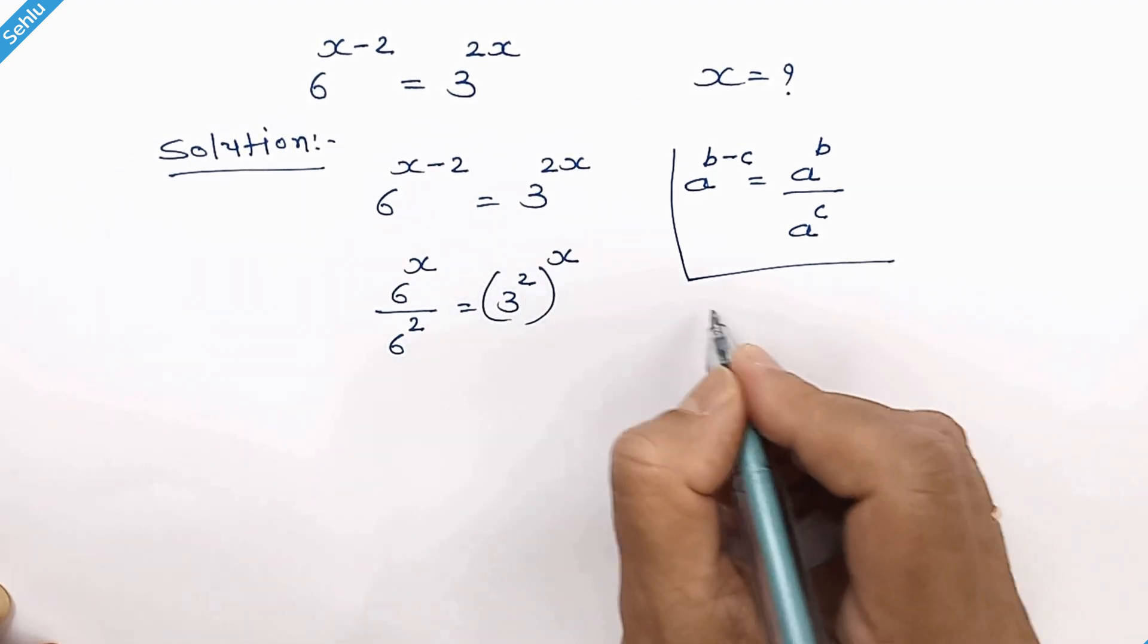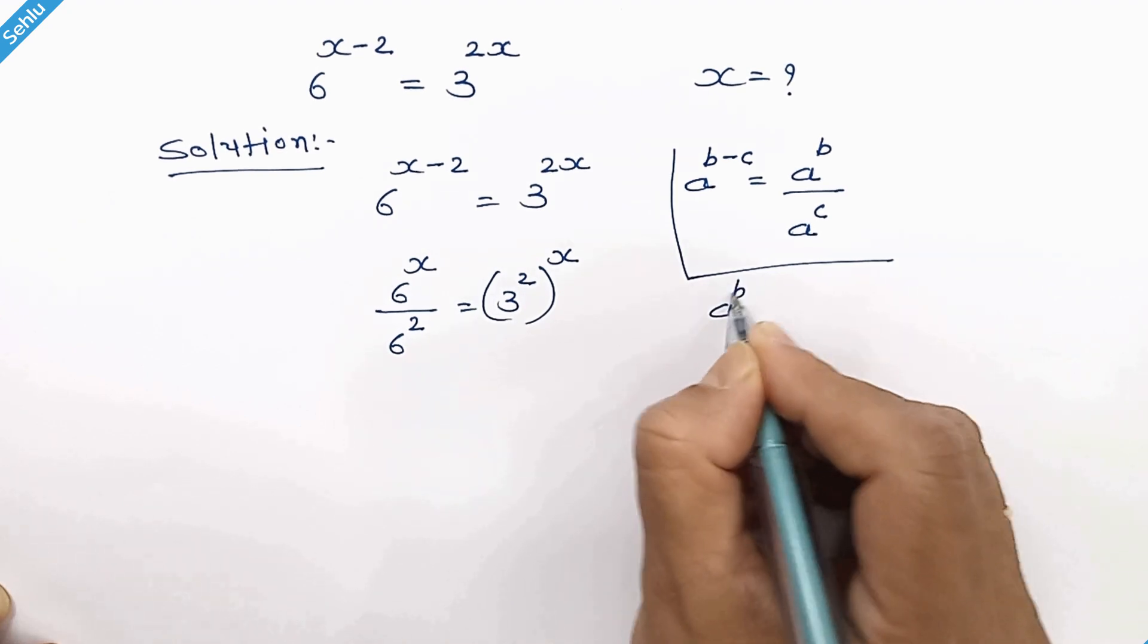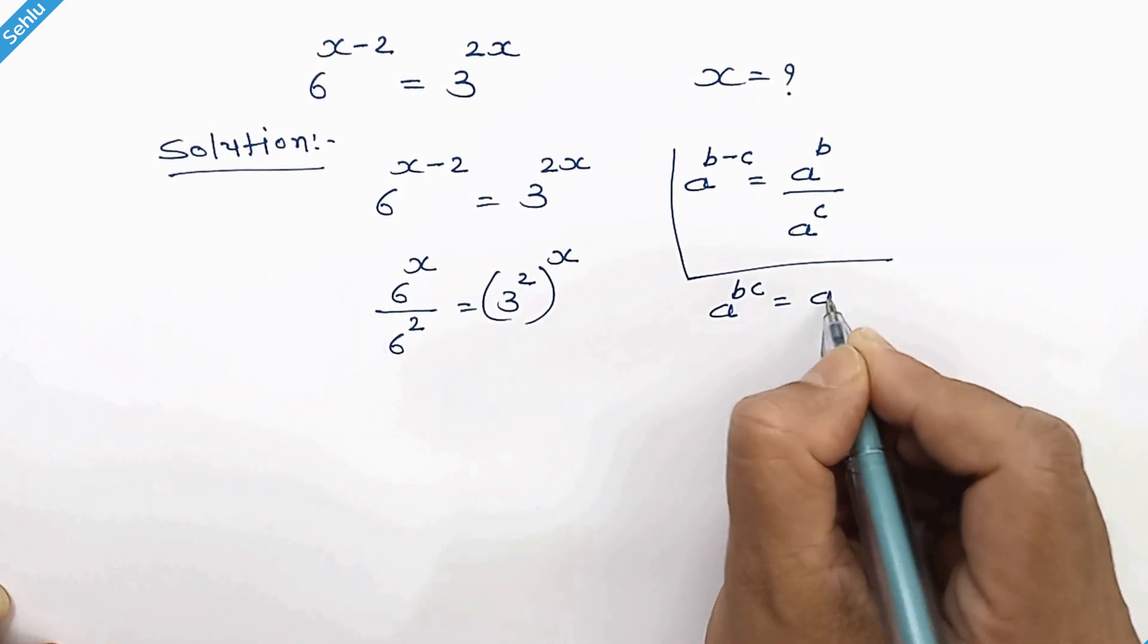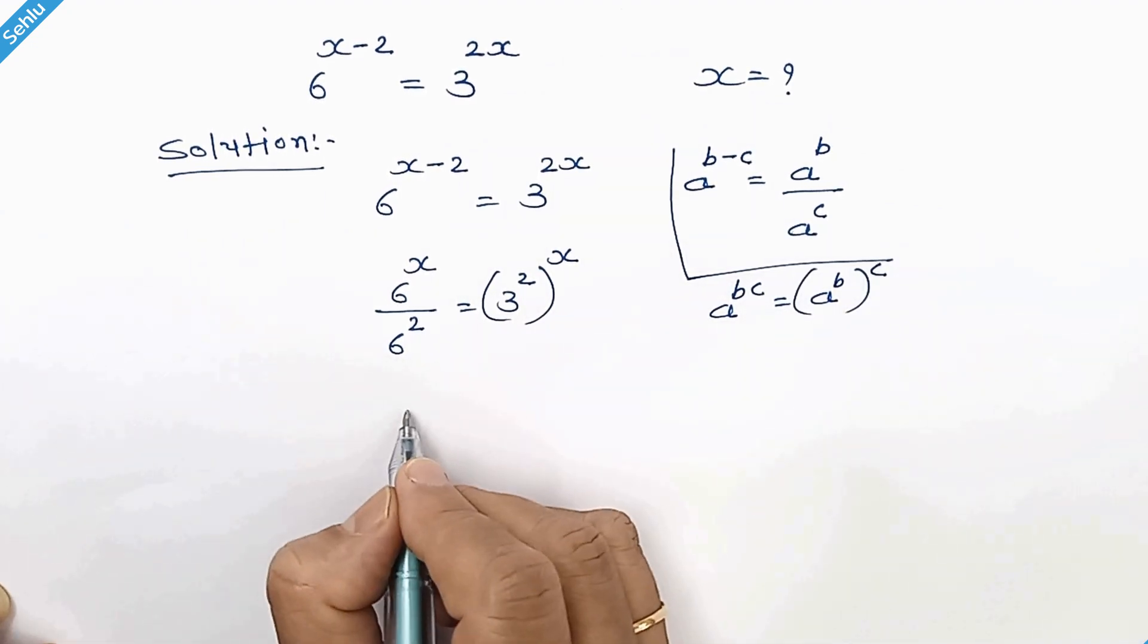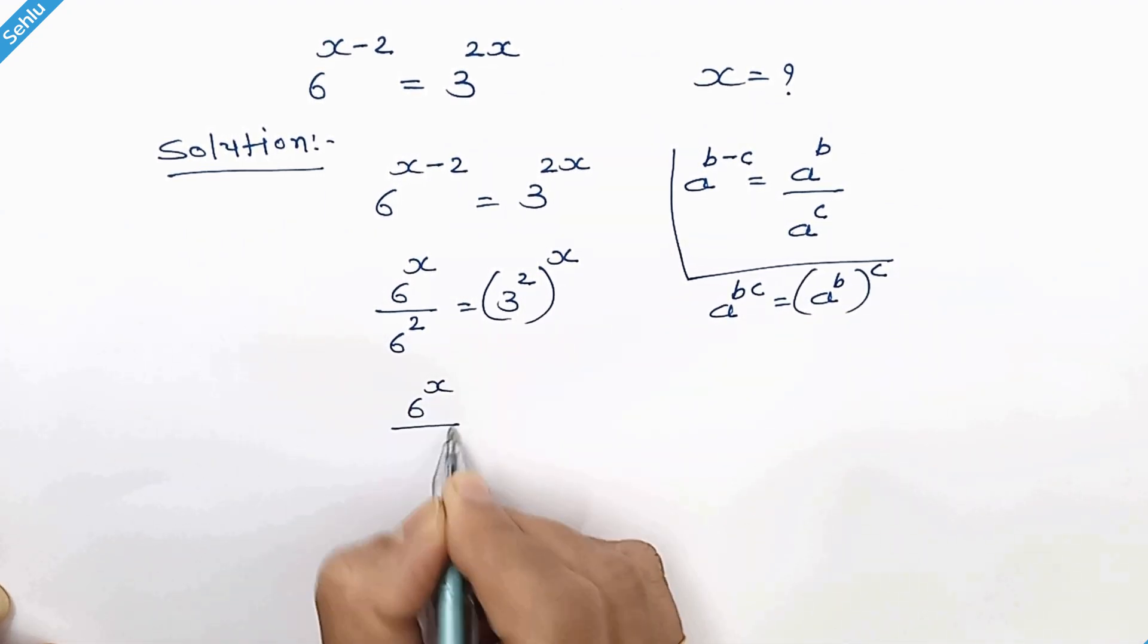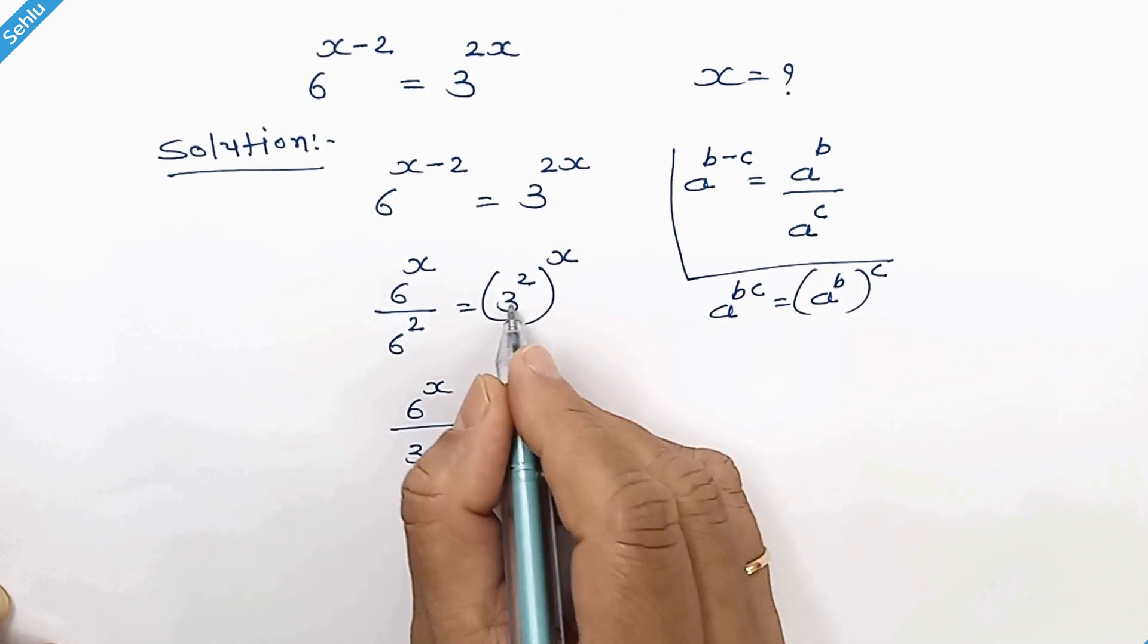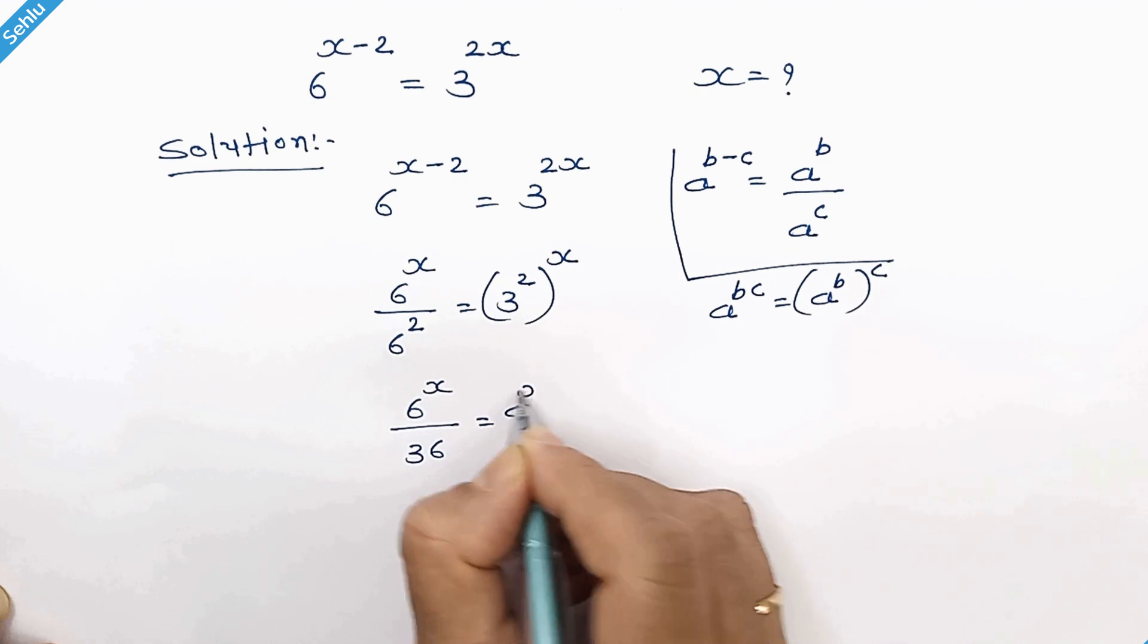We can write this because when we have a to the power b times c, it can be a to the power b whole to the power c. Now we have 6 to the power x and here we have 36 is equal to 3 square is 9 whole to the power x.